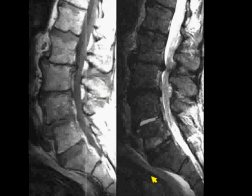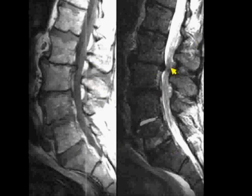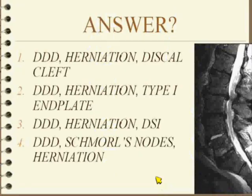Here's another example. What are you going to do with this? T1, T2. A lot of stuff going on — degeneration here, some other findings. Is this degenerative disc disease, herniation, and discal cleft? Is it DDD, herniation, and type 1 end plates? Is it degenerative change, herniation, and a disc space infection? Or is it degeneration, Schmorl's nodes, and a herniation?